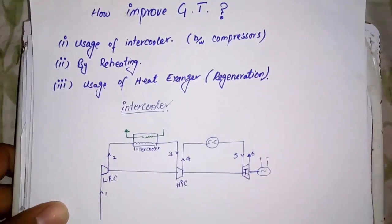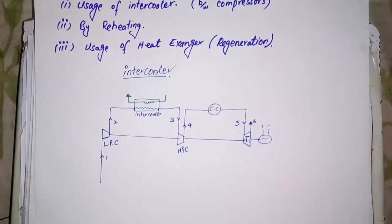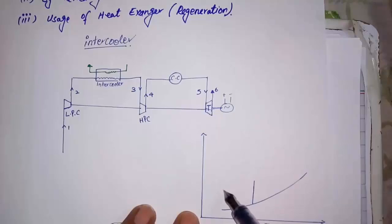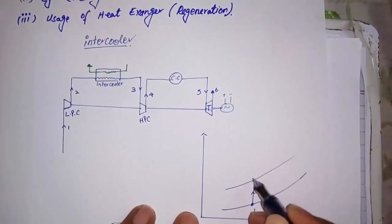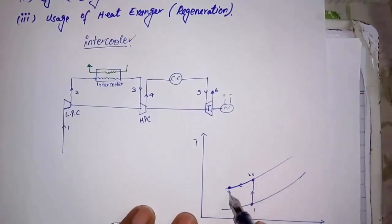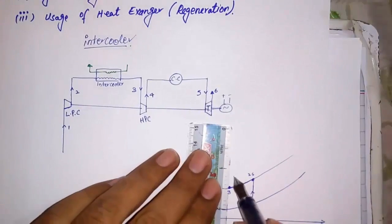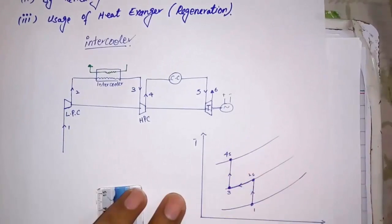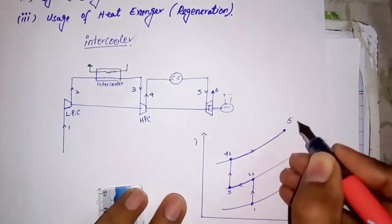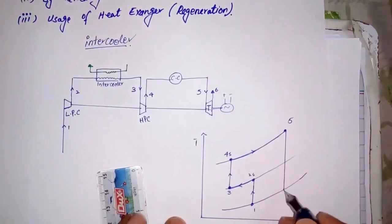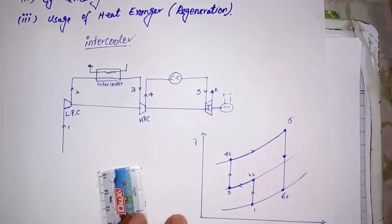Let me write TS diagram. Then we will discuss how gas power plant is improved. From one to two, it is compression in LPC, which is low pressure compressor. And 2 to 3, it is intercooler. 3 to 4 is also compression in high pressure compressor. 4 to 5 is combustion chamber - enthalpy will be increased as well as temperature. 5 to 6 is expansion in turbine.